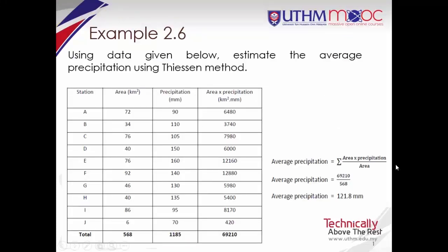Example 2.6: Using the data given, estimate the average precipitation using the Thiessen method. All the information is given in the table — stations A to J, their areas, and precipitation values. Using the Thiessen method, we first multiply the area with the precipitation for each station. To get the average precipitation, this value is divided by the summation of area. So, 69,210 divided by 568 is equal to 121.8 millimeters.